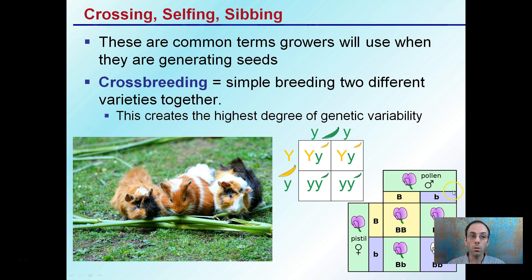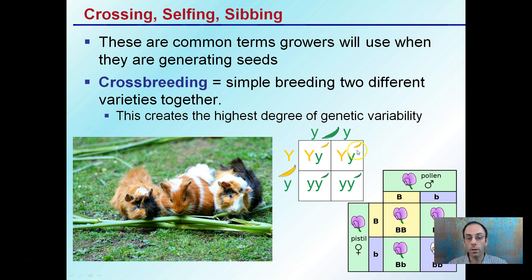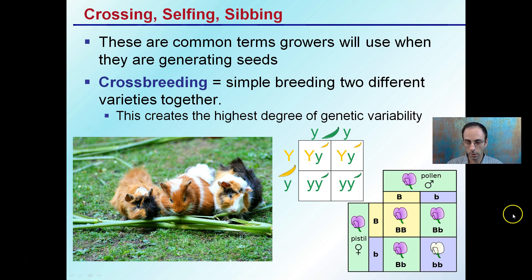Now there are other terms used, such as crossing, selfing, and sibbing. These are common terms used by growers when generating seed or generating crosses. The first and most obvious is crossbreeding — simple breeding of two different varieties together — and this can create the highest degree of genetic variability. Here we see a homozygous recessive green-color peapod and a heterozygous peapod with yellow being dominant. Crossing these together, we see variability in both phenotype and genotype.